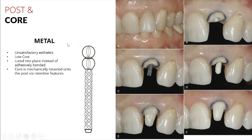In contrast, a metal post requires opaquing to block out the metal color. The advantage of a metal post is that it's pretty low cost — a metal post is a lot cheaper to use than a fiber post, but you have some aesthetic compromise. The other downside is you're solely relying on mechanical retention to keep that post within the canal space. You can see there are serrations along the post that the cement will find its way into in order to lock into that post space.